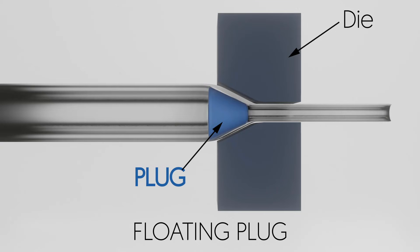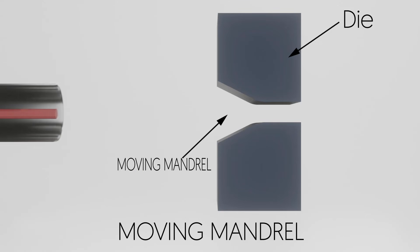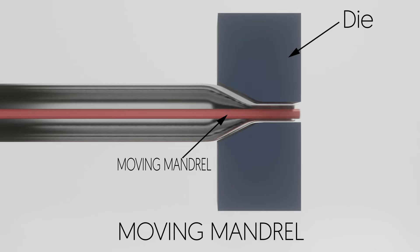Moving mandrel: in this process, both the tube and mandrel are moved together through the die. It produces high quality tubing with very good dimensional accuracy.